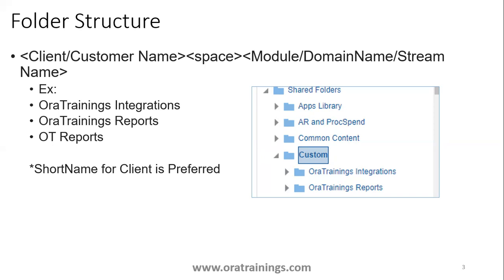the module or track name. For example, if my company name is Aura Trainings, I prefer 'OT' as the short name, then followed by the track. For a bigger organization you can have OT_Integrations, OT_Financials, OT_SupplyChain, OT_SCM, OT_EPM, or if you have different companies: OT_Company1, OT_Company2, OT_Company3. The first thing to decide is your folder structure.